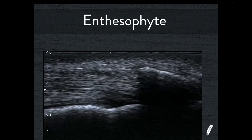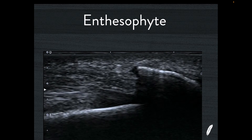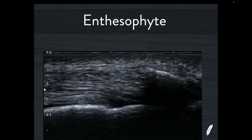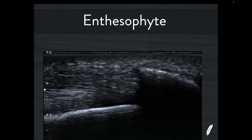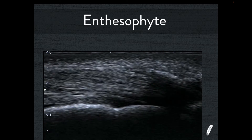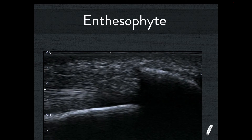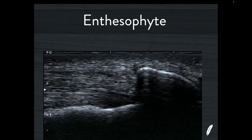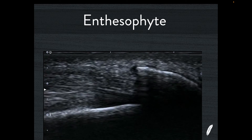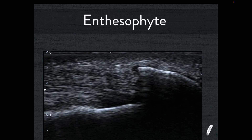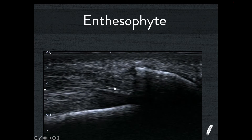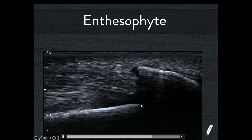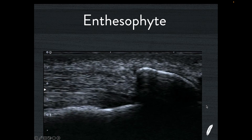Just to show some alternatives: this is an enthesophyte — really bone density, coming directly from the enthesis, a bone spur growing into the tendon representing breakdown between tenocytes and osteocytes. You see these very commonly in seronegative arthropathies such as psoriatic arthritis. It's very dense with a dense acoustic shadow — it looks nothing like the patient we've been discussing.